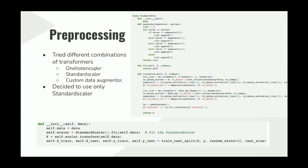Our study distinguishes itself through a meticulous approach to pre-processing data, employing various column transformers and pipeline combinations such as one-hot encoding, standard scaling, and a custom data augmenter. After conducting a series of experiments to evaluate their impact on prediction accuracy, we automatically selected the standard scaler alone for its superior performance. This decision was informed by empirical evidence gathered during the trials, underscoring our optimized pre-processing methodology.